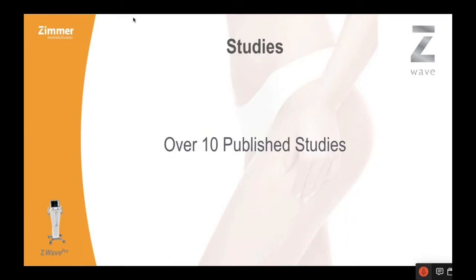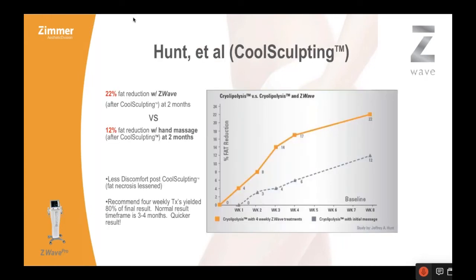There are over 10 published studies looking at Z-Wave in this regard. The Hunt study looked at CoolSculpting, and there was a 22% reduction of fat with Z-Wave after CoolSculpting at two months versus 12% with hand massage. What this means is that after you take the CoolSculpting applicator off and you've got this big frozen stick of butter, when you do this with Z-Wave and you're pounding with these sound waves, the frozen fat dissipates more quickly. Some cells that otherwise would have survived undergo immediate lipolysis — instead of a programmed apoptosis three months later, these cells are dead at minute one of hitting them with the Z-Wave.